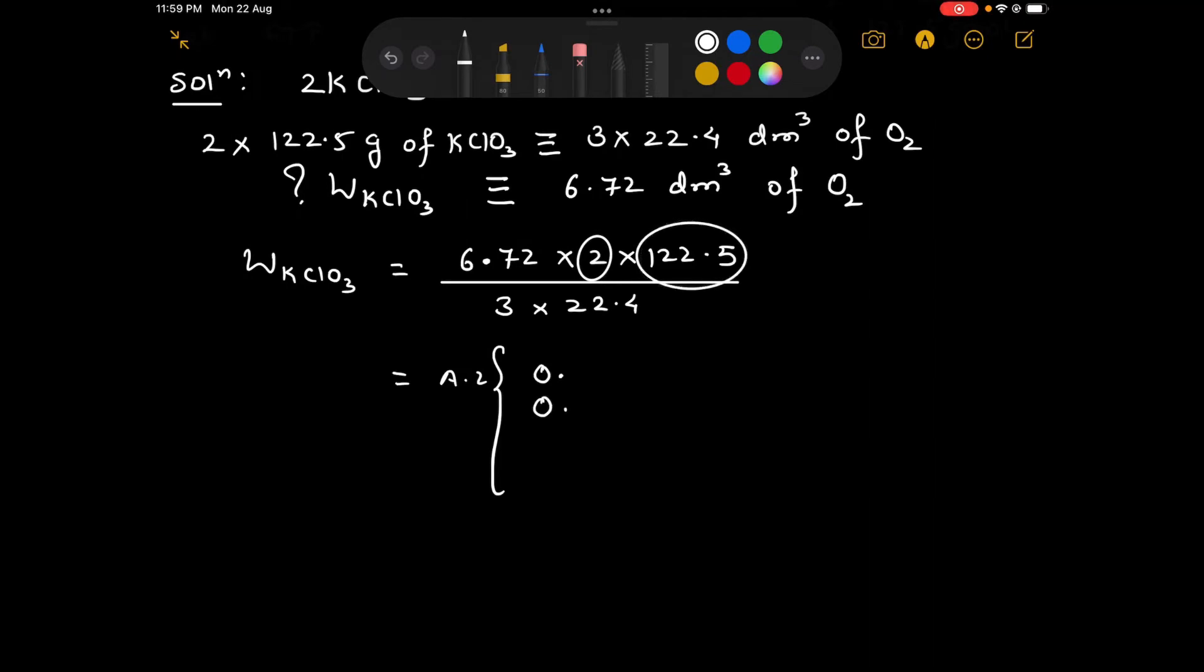And here before the decimal we are having 3 digits. So according to the formula n minus 1, that is 3 minus 1, the characteristic is 2. We are going to add these 3 logs.